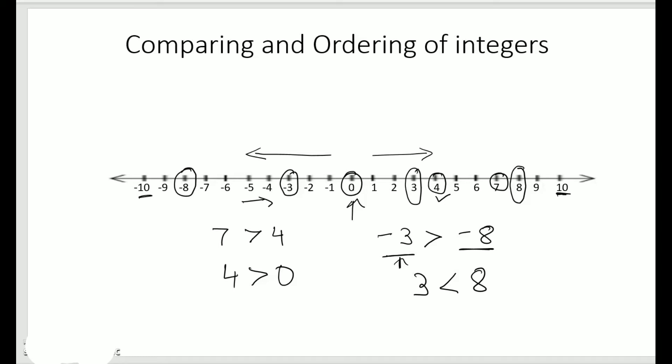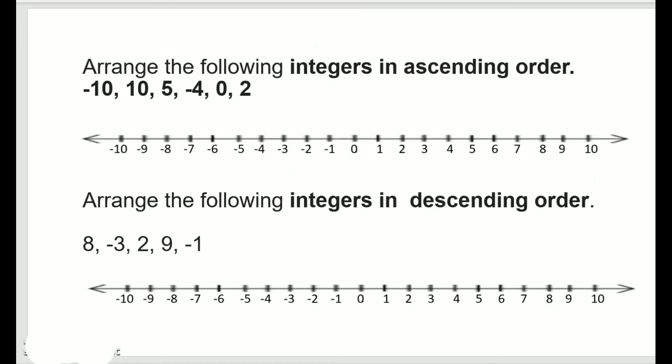On a number line, the number increases as we move to the right, and the number decreases when we move to the left. Now let's see some examples of arranging numbers in ascending and descending order.